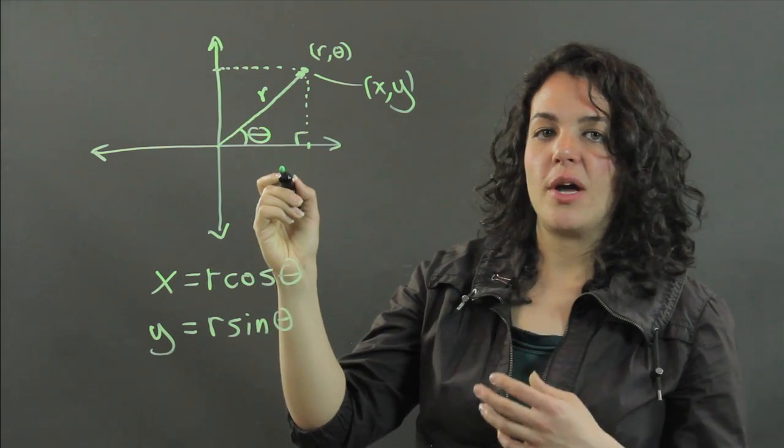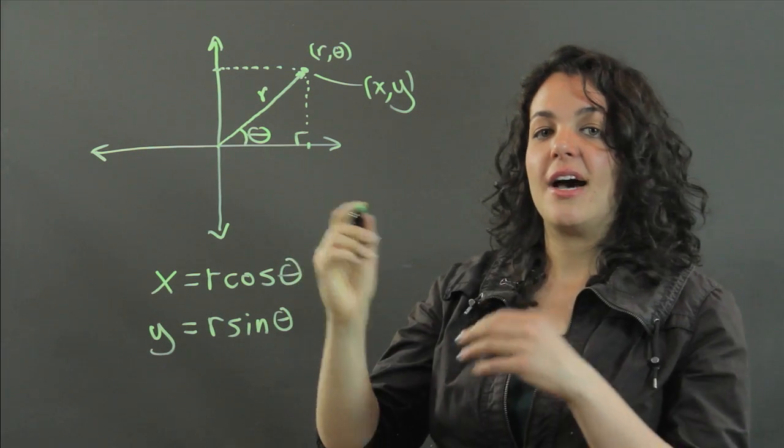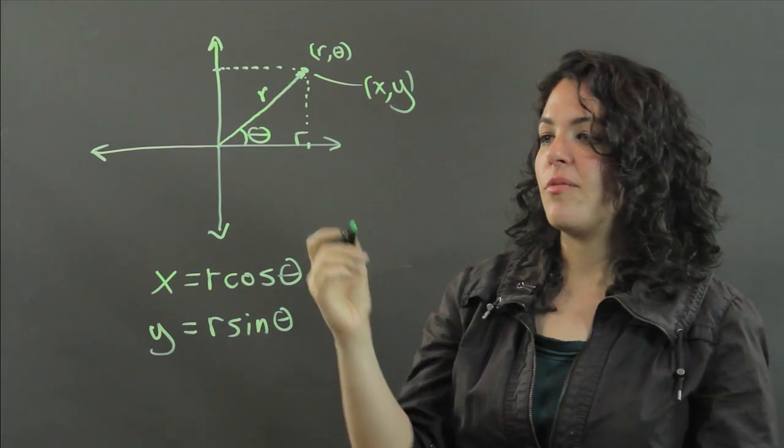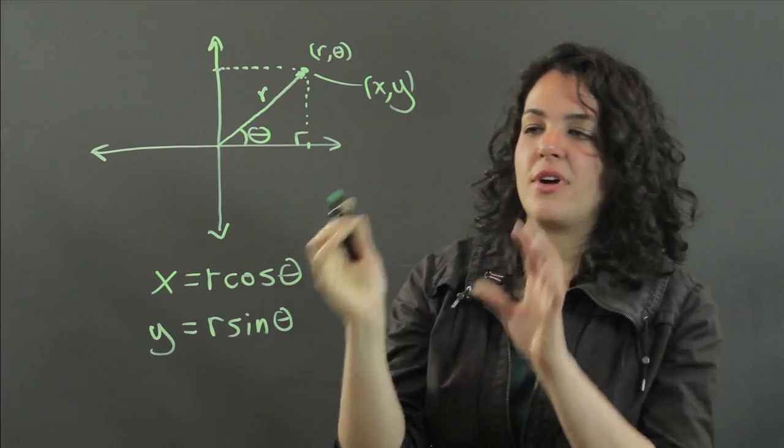And if I multiply y over r times r, the r's cancel out, and I get y.